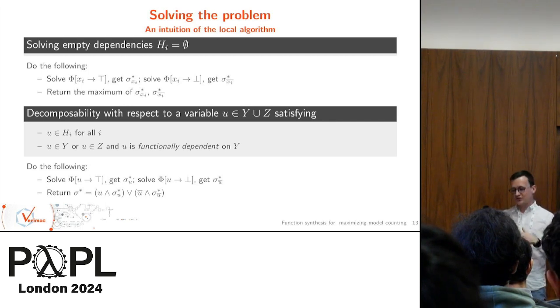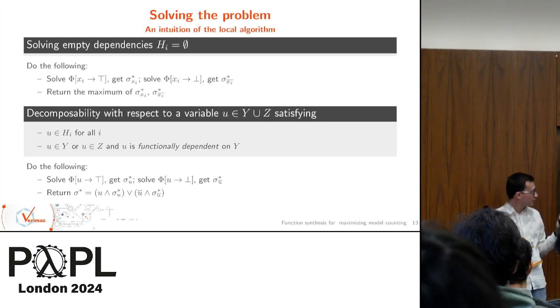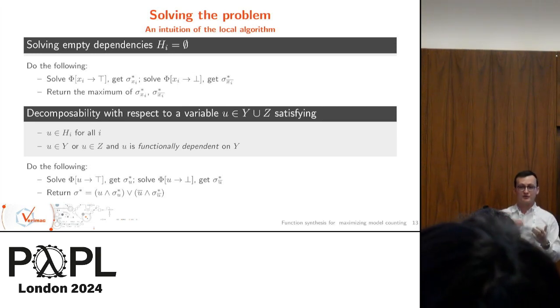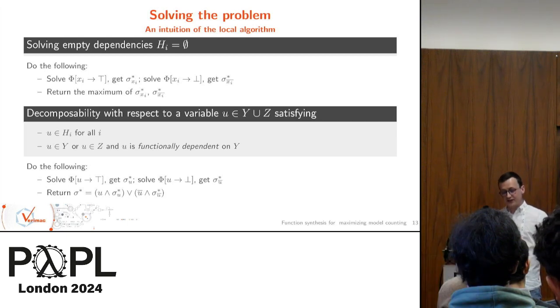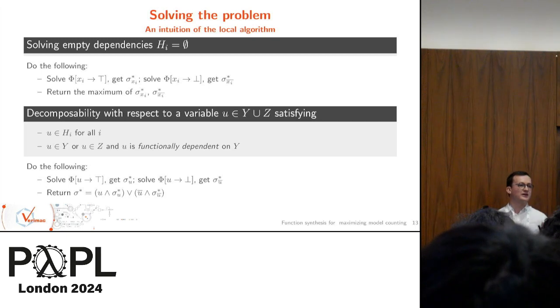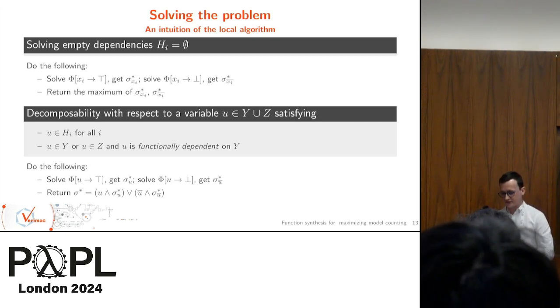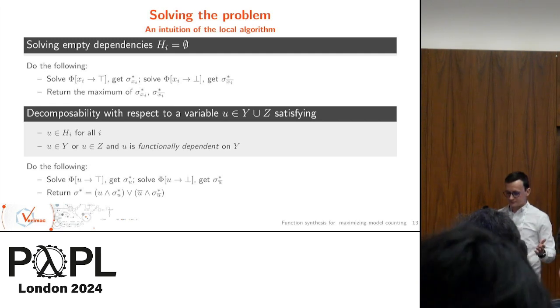The second case is a little more insightful. We have a decomposability criterion with regard not to a maximizing variable, but to a dependency variable. The criterion is: my decomposable variable has to be in all the dependencies of all the variables, and it has to follow some kind of functional dependencies between the counting variables and this variable. In this case, we do a similar thing. We set this variable to true, set this variable to false, solve both cases, and then instead of returning the maximum, we merge the two substitutions and select them based on the value of u, because u is a dependency. We can see here that in this case we can have a tree-like search. So this is the end of the local algorithm.